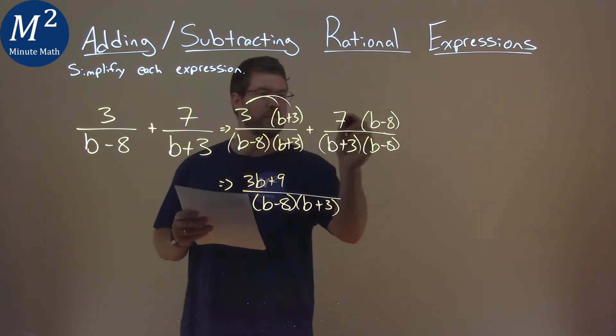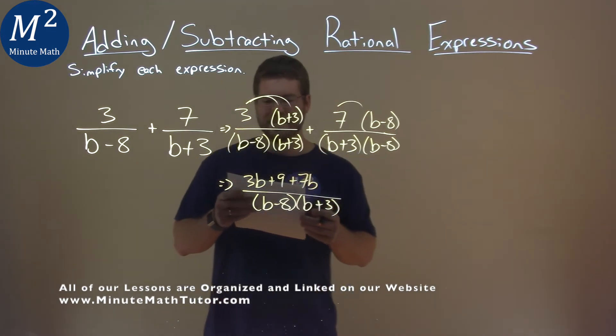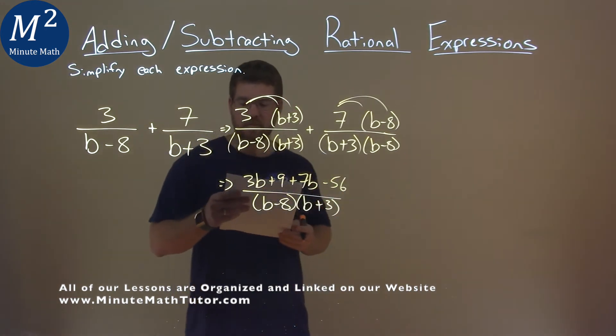Then from here, we want to do the same thing with the 7. 7 times b is 7b, and 7 times 8 is 56. Let me subtract that, 56.